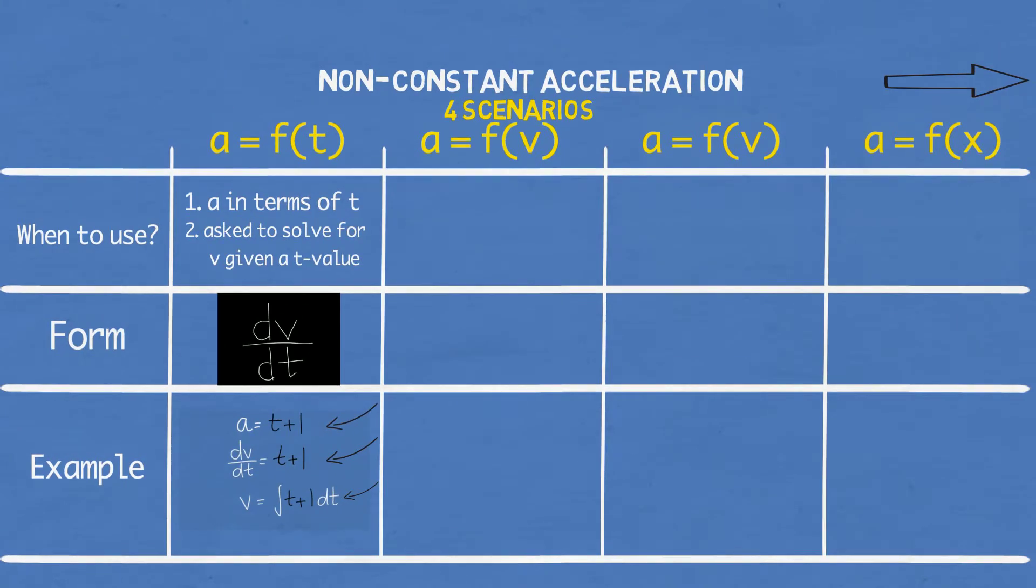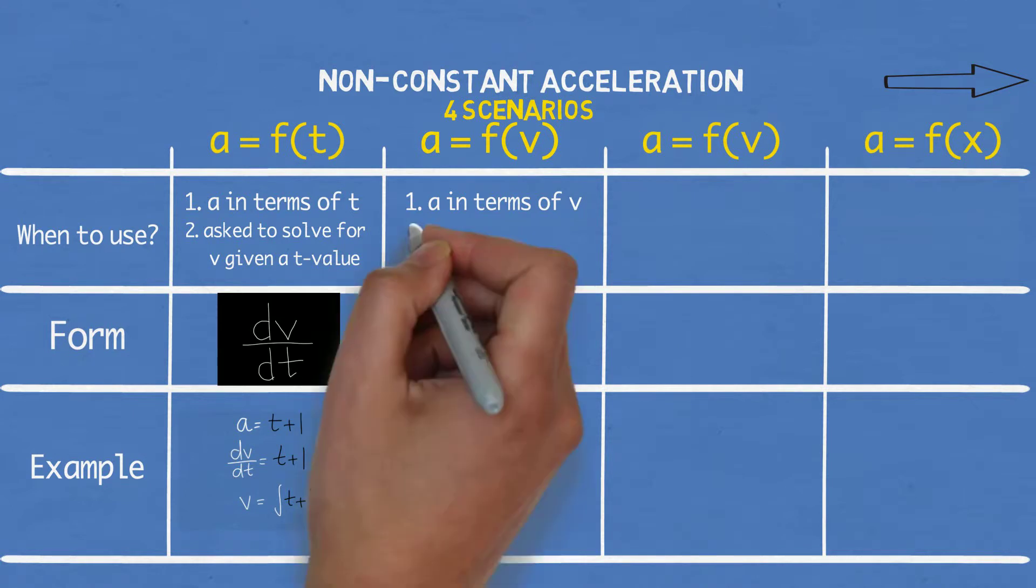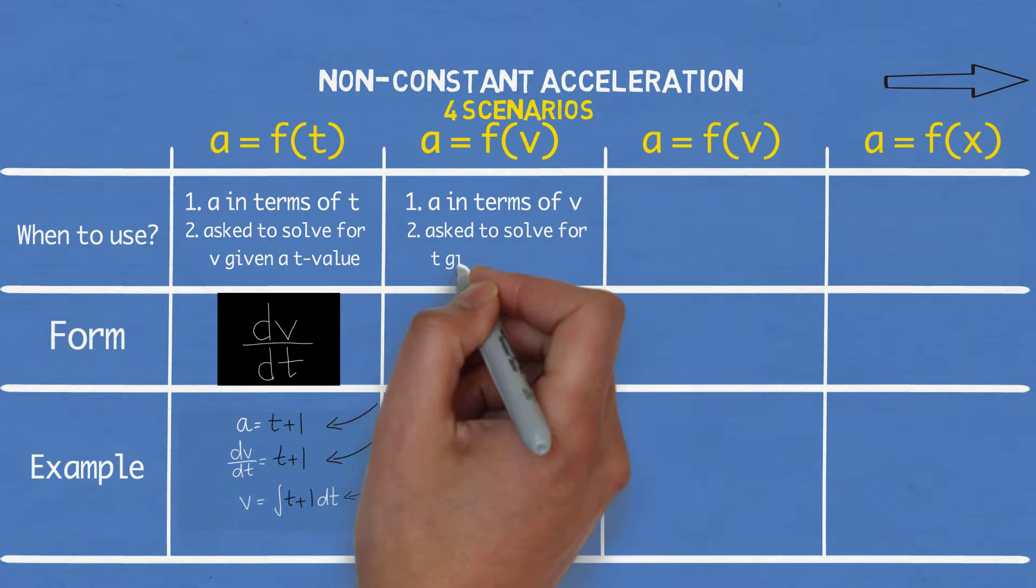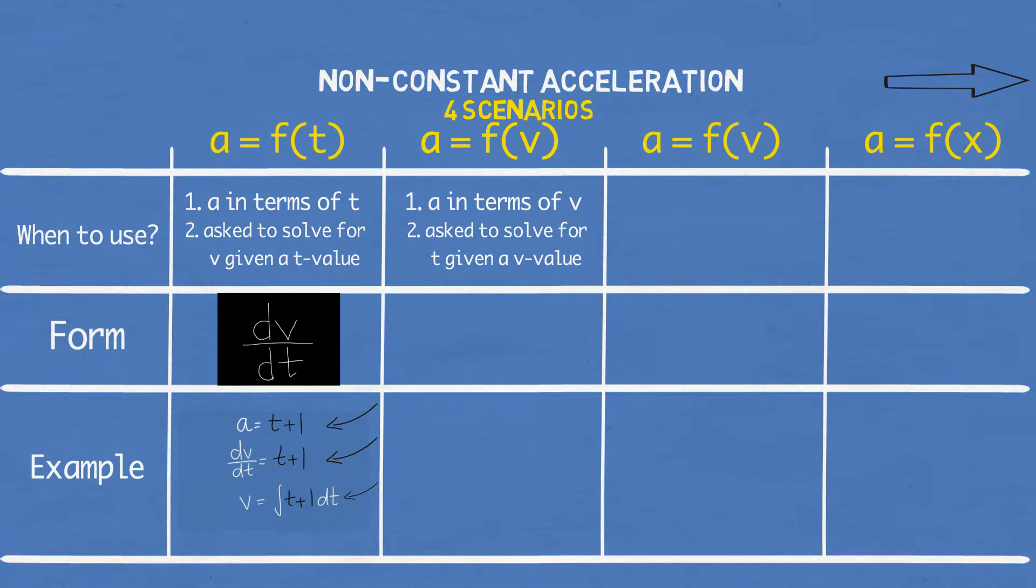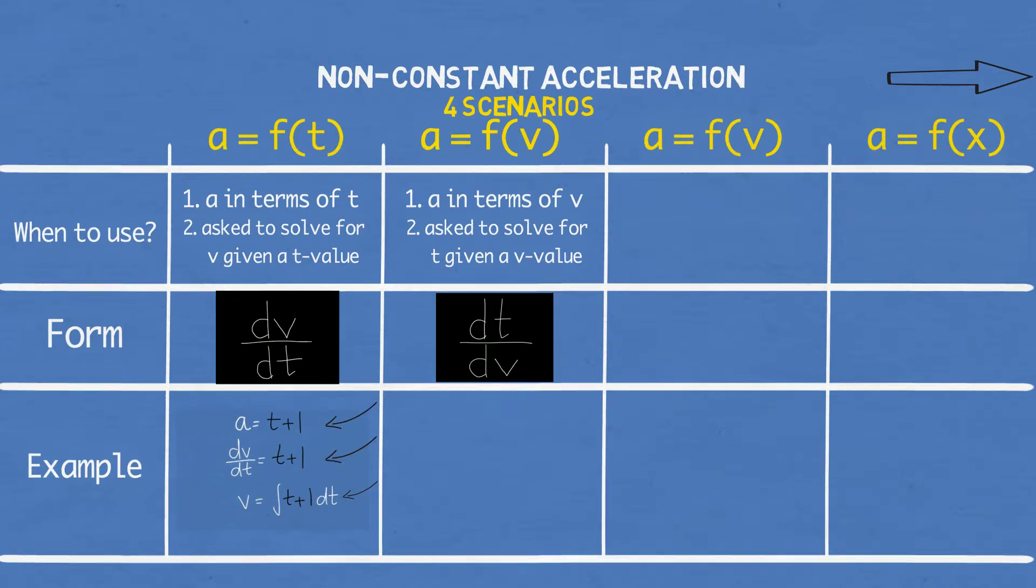On to the second case. You use this when you're given acceleration in terms of velocity and you are asked to solve for time for a given velocity value instead. This is pretty much the opposite of scenario 1 and the formula shows this. You use dt over dv instead.